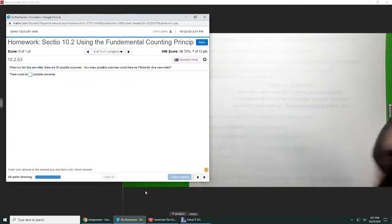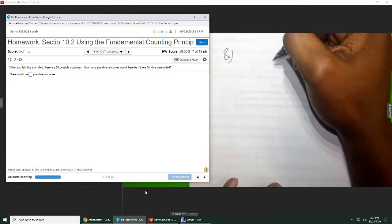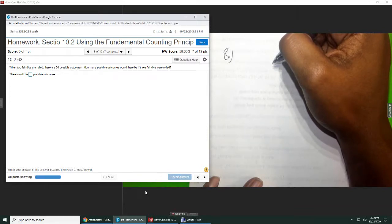All right, number eight. We're given when two fair dice are rolled, there are 36 possible outcomes. How many possible outcomes would there be if three fair dice were rolled?